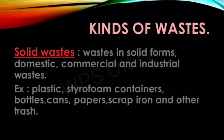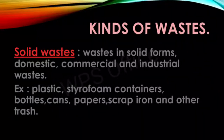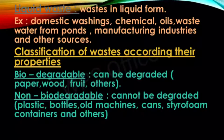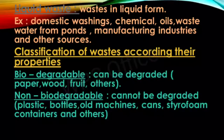Now, the kinds of waste. The first type is solid waste — waste in solid form, including domestic, commercial, and industrial waste. Examples include plastic, styrofoam containers, bottles, cans, papers, scrap iron, and other trash materials. The second type is liquid waste — waste in liquid form. Examples include domestic washings, chemicals, oils, wastewater from ponds, manufacturing industries, and other sources.